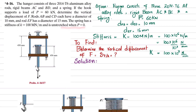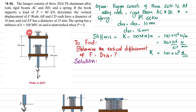You can see this is a hanger consisting of three rods made of 2014-T6 aluminum alloy, two beams, and a spring. When the load P is applied, we have to find the displacement of point F with respect to point A. Point A is not explicitly given as a reference but we will measure displacement of F with respect to A.